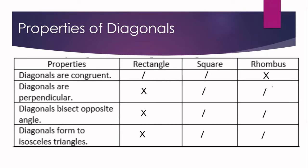Let us discuss the properties one by one. Number one: diagonals are congruent. Diagonals are congruent if the parallelogram is a rectangle or a square. When we say congruent, it means the measures of the two diagonals are the same. So if I have a rectangle and one diagonal measures 10 units, the other diagonal is also 10 units. And in a square, if one diagonal is 4 units, the other is also 4 units, because in a rectangle and a square the diagonals are congruent.